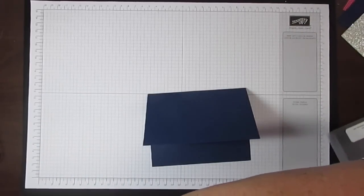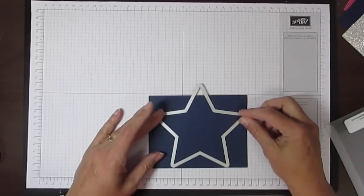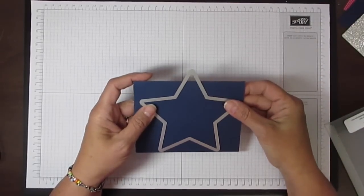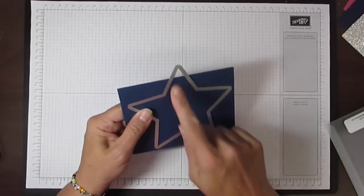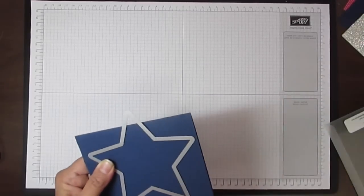Then you're going to use your framelits. To begin with, I'm going to start with the largest of the stars. I'm just going to line this up on my card so that just one of the points is off the edge. This is the folded edge because that's what gives me the crease on my card.